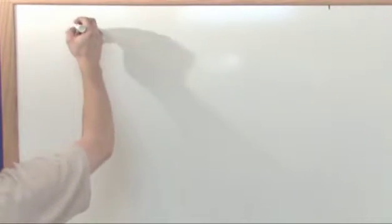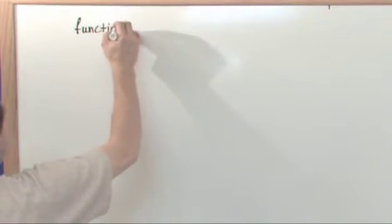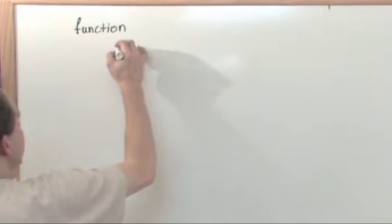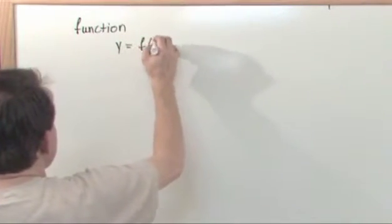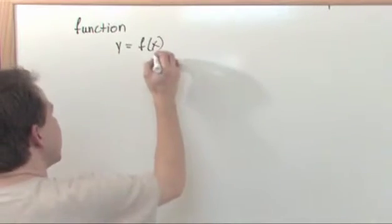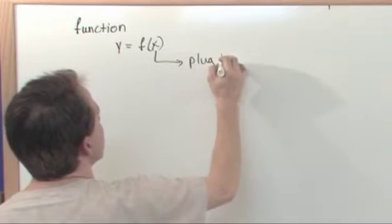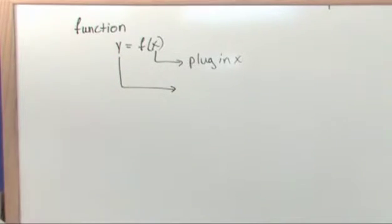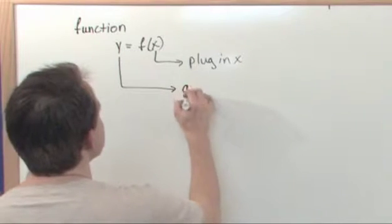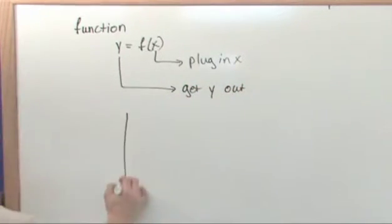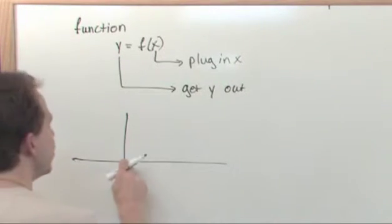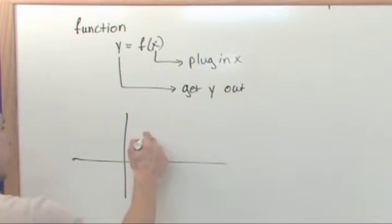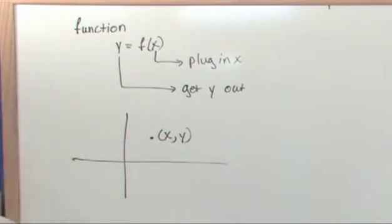Recall that a curve can be represented by a function — this is super basic stuff, no trick questions. In general we have y, which is also called f of x. We plug in x into this function, which is just some equation, and we get y out. Back from algebra, you know that when you do this, you get two points: an x point and a y point, and you plot this thing on a graph at the point (x, y). You plug something in, you get something out.